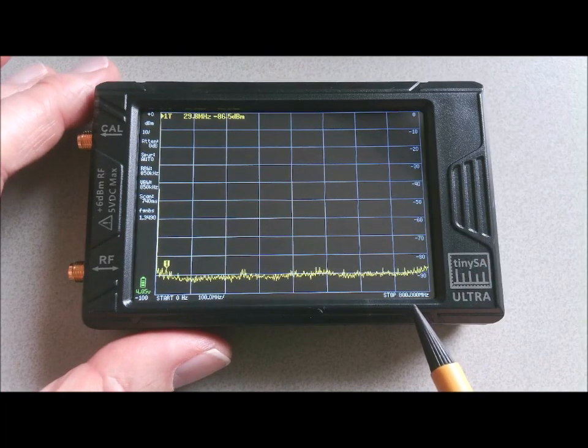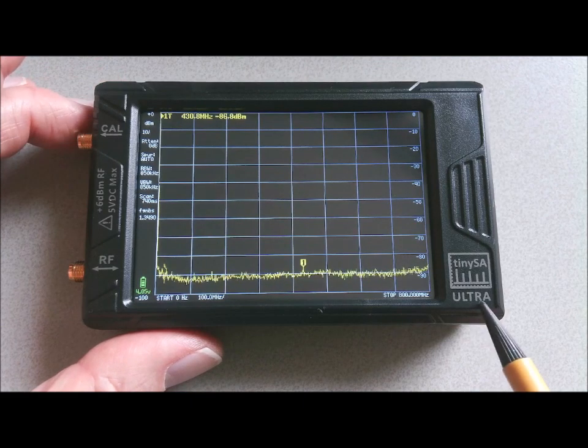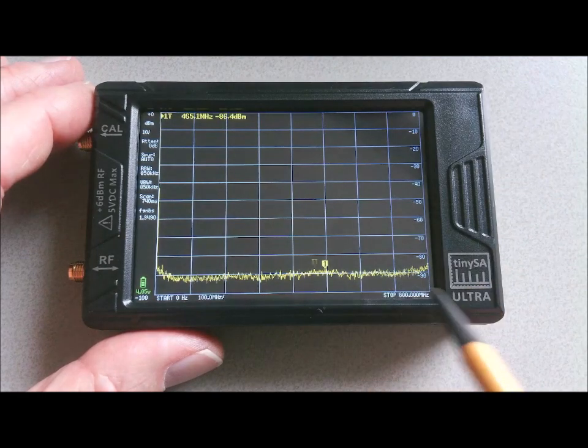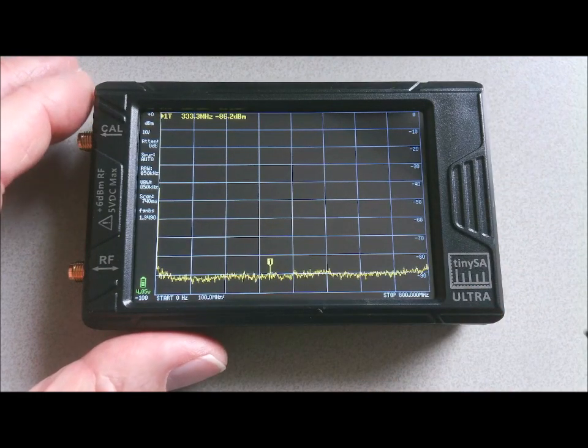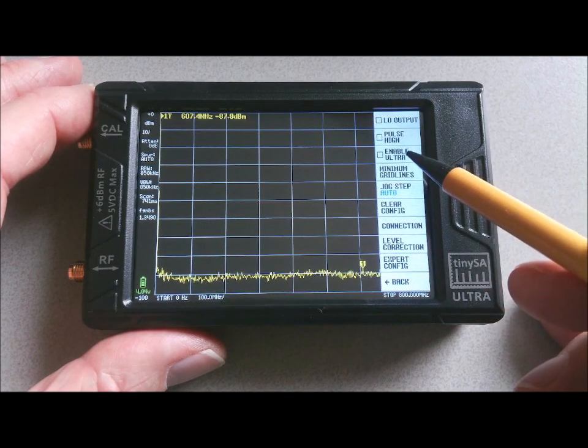But the measurements of the TinySA do not stop at 800 MHz, and this is due to its Ultra mode. In the Ultra mode, you can reach much higher frequencies. So let's first enable the Ultra mode. We go to config, more, and we enable Ultra.